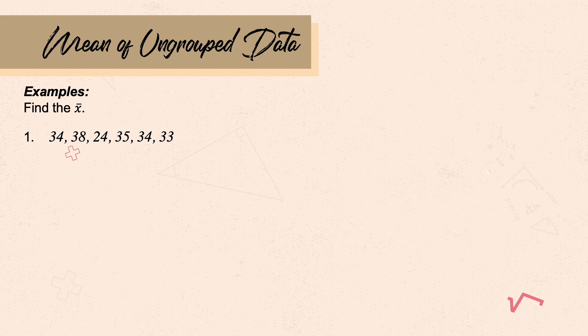More examples. Find the mean of the following: 34, 38, 24, 35, 34, 33. First, get the sum, which is 198. There are 6 values in the sample. Using the formula, it will be 198 over 6. So 198 divided by 6 is 33.